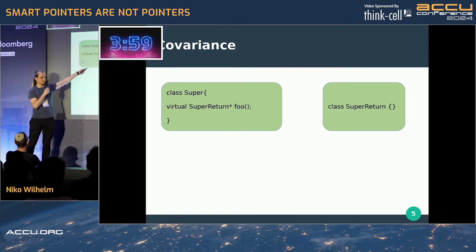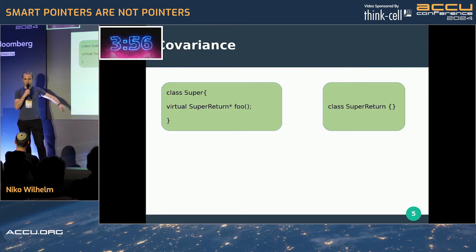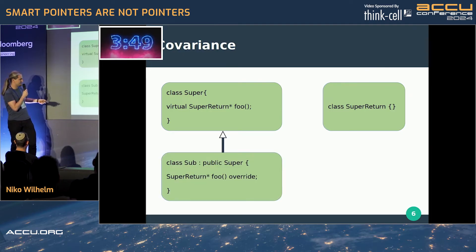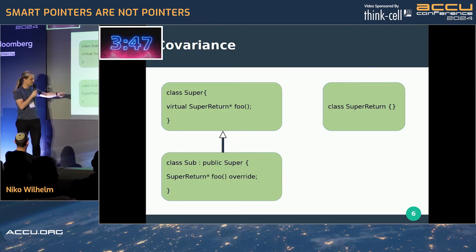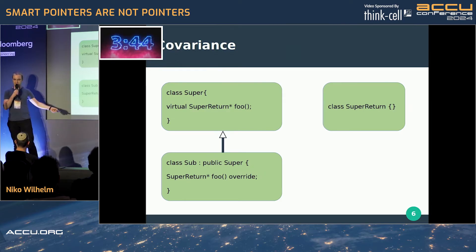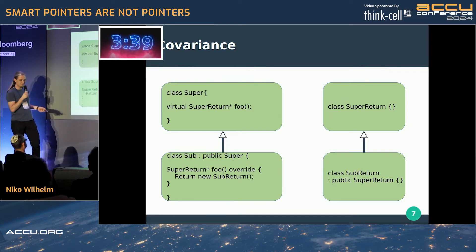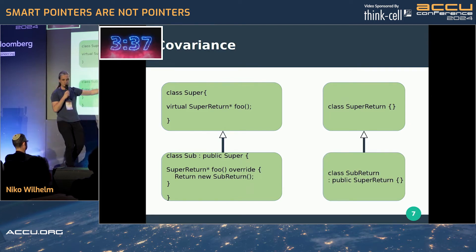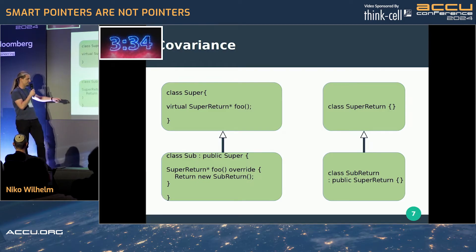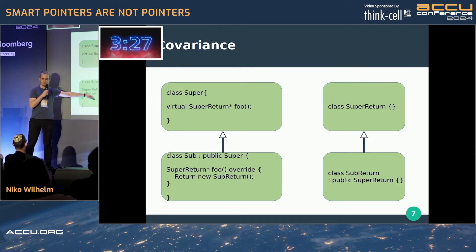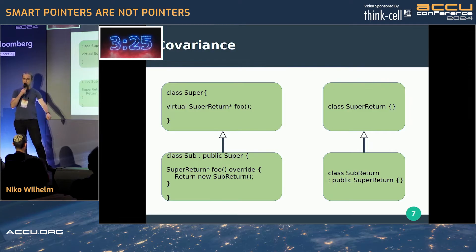Let's say we have two classes — one class Super with a virtual function returning a pointer to Super. But it's C++, we love inheritance hierarchies — the deeper and more the better, right? So let's add a subclass that overwrites that function with the same signature. Even better: we can also inherit from our return type and do great stuff.